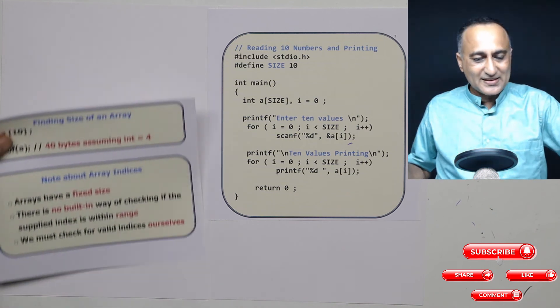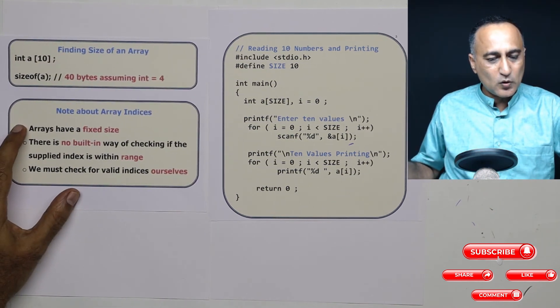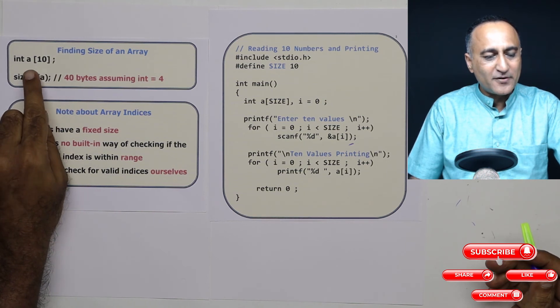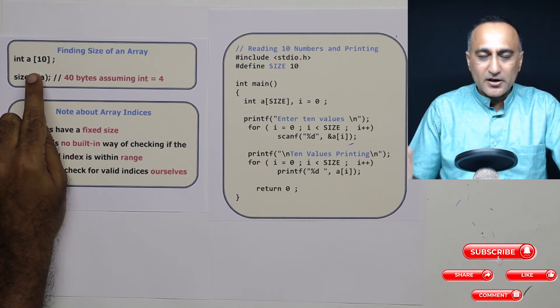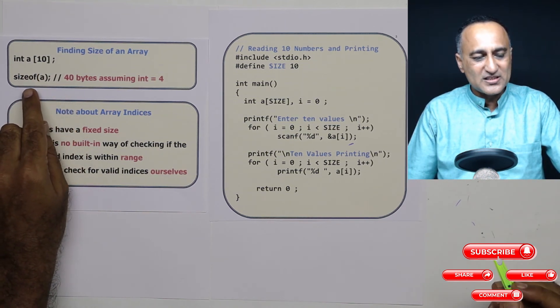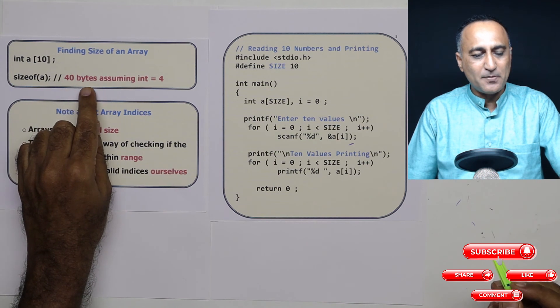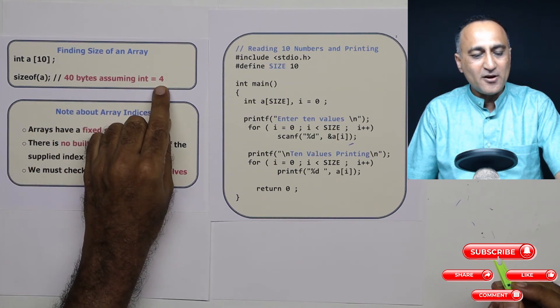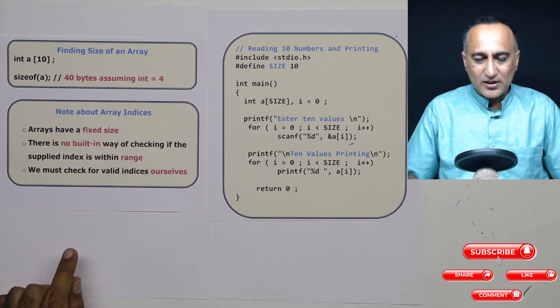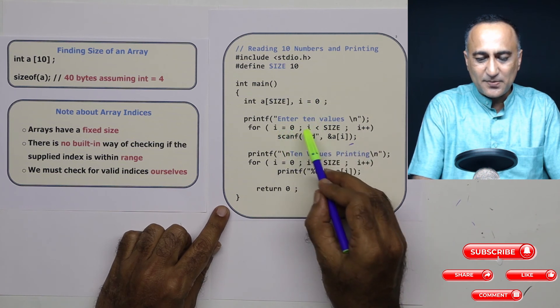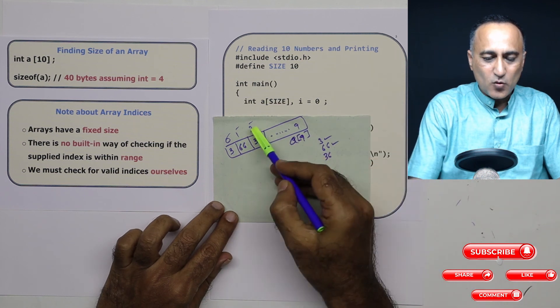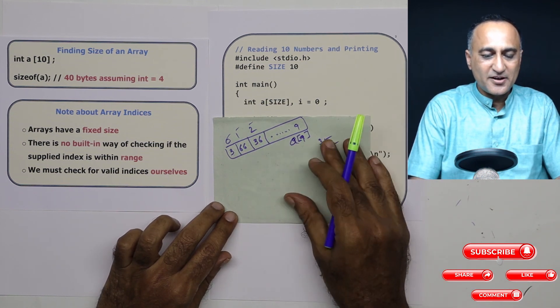Suppose you had written code like this: int a of 10, and you use the sizeof operator to find the size of a. Assuming integers occupy four bytes, the sizeof this particular array would have printed 40 bytes, because in my case I am assuming int to be four bytes. Now one note about the array indices: indices are all the subscripts. i is a subscript which is used to travel through the array. So in this case, 0, 1, 2 are subscripts which help us get into the array.